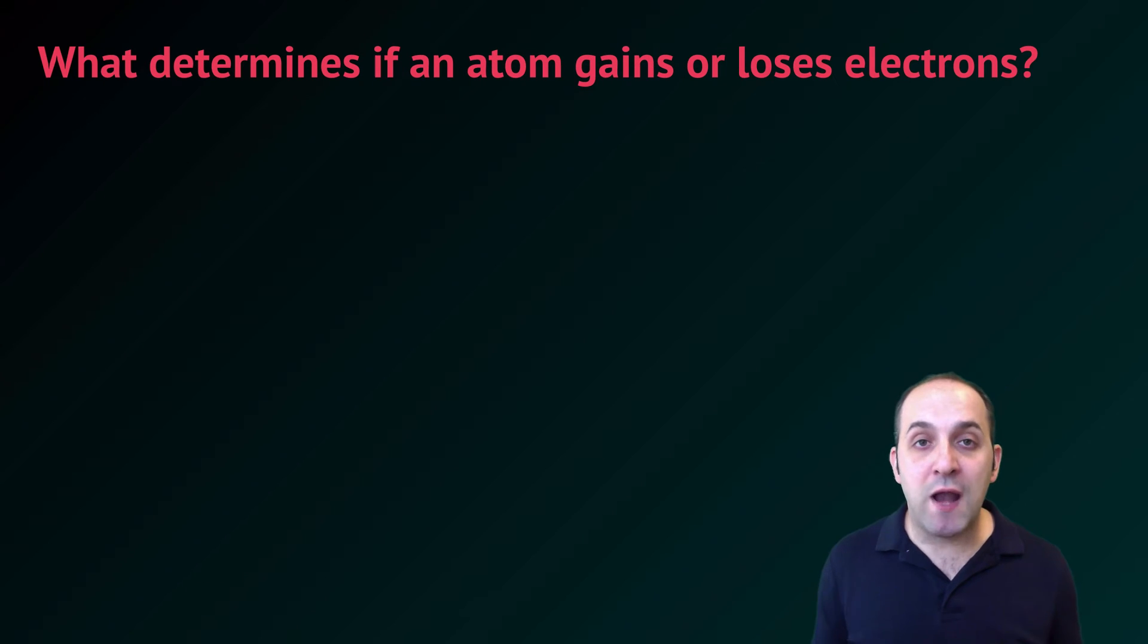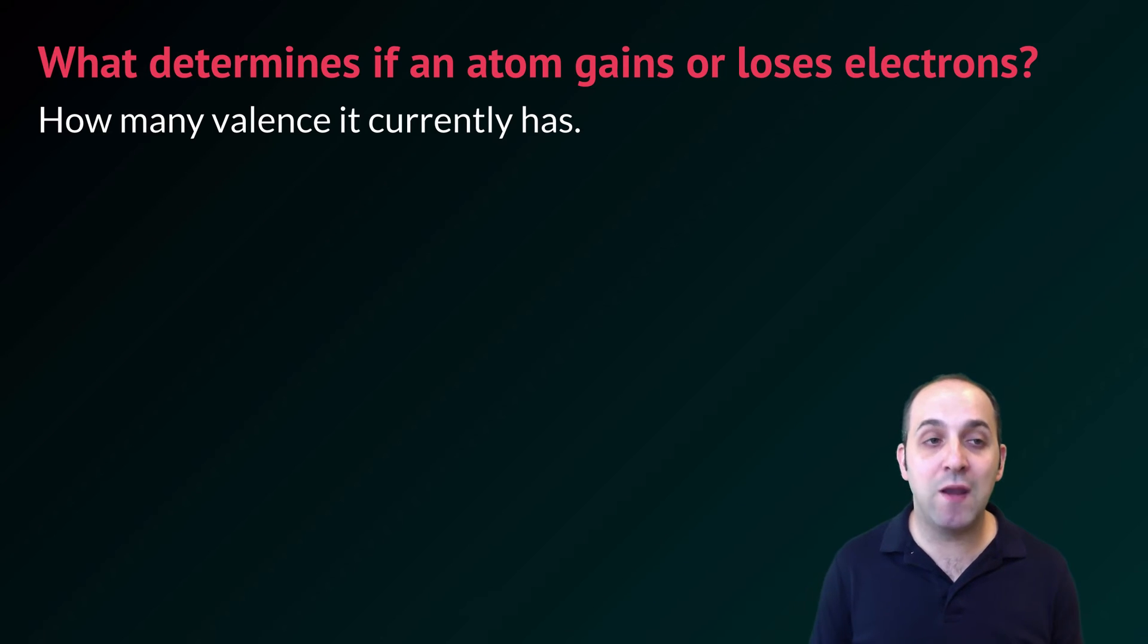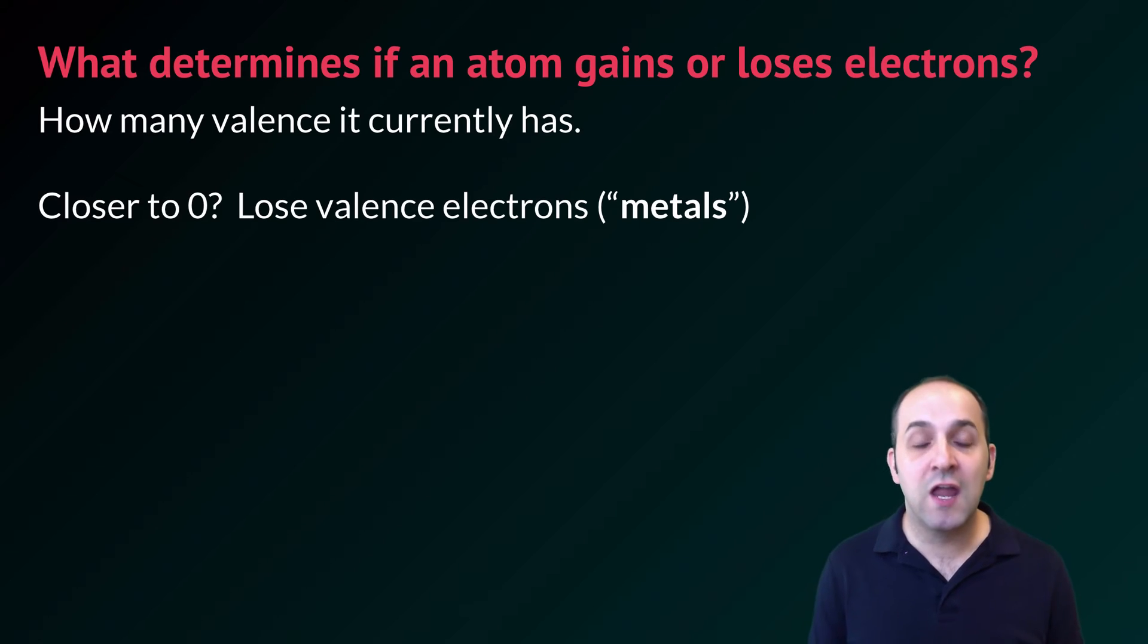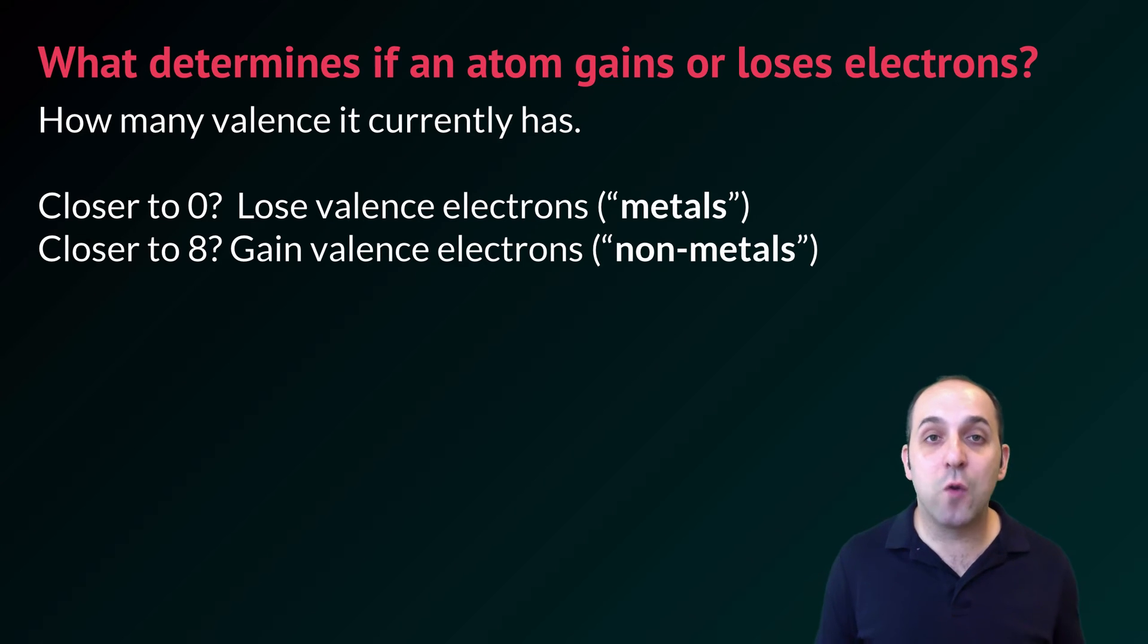Another question that you might ask is what determines if an atom gains or loses electrons? And that really has to do with how many valence electrons it currently has. If it's closer to 0, it's going to lose valence electrons. Atoms that do this are called metals. If it's closer to 8, it's going to gain valence electrons. Atoms that do this are called non-metals.